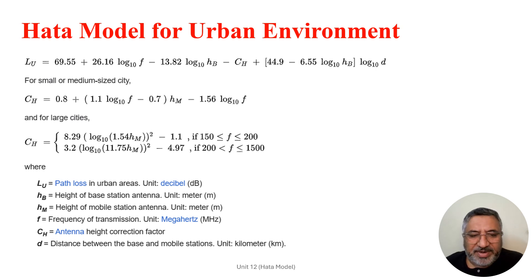CH is the antenna height correction factor. It is empirically characterized as CH equals 0.8 plus 1.1 multiplied by log F minus 0.7, multiplied by HM minus 1.56 log F. This CH value is used for small or medium-sized cities.